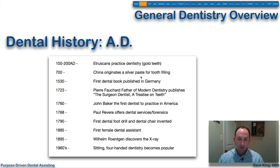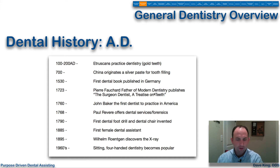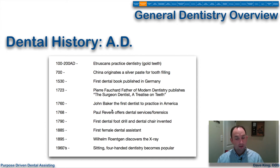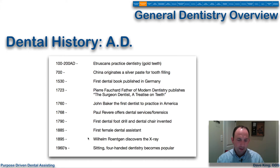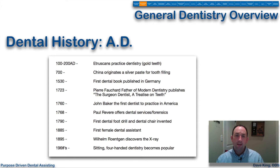The first dental amalgam was designed in China — a silver paste for filling teeth. The first dental book was published in Germany in 1530. In 1723, Pierre Fauchard, the father of modern dentistry, published The Surgeon-Dentist: A Treatise on Teeth. John Baker was officially the first American dentist to practice in America, and Paul Revere offered his dental services in forensics. In 1790, the first dental drill with a foot pedal was designed, and the dental chair was invented. The first female dental assistant appeared in 1885. In 1895, we had the advent of x-rays by William Runt. And in the 1960s is when four-handed dentistry with a dentist and a dental assistant really started to jump out. It's a long history of dentistry developing over the ages.